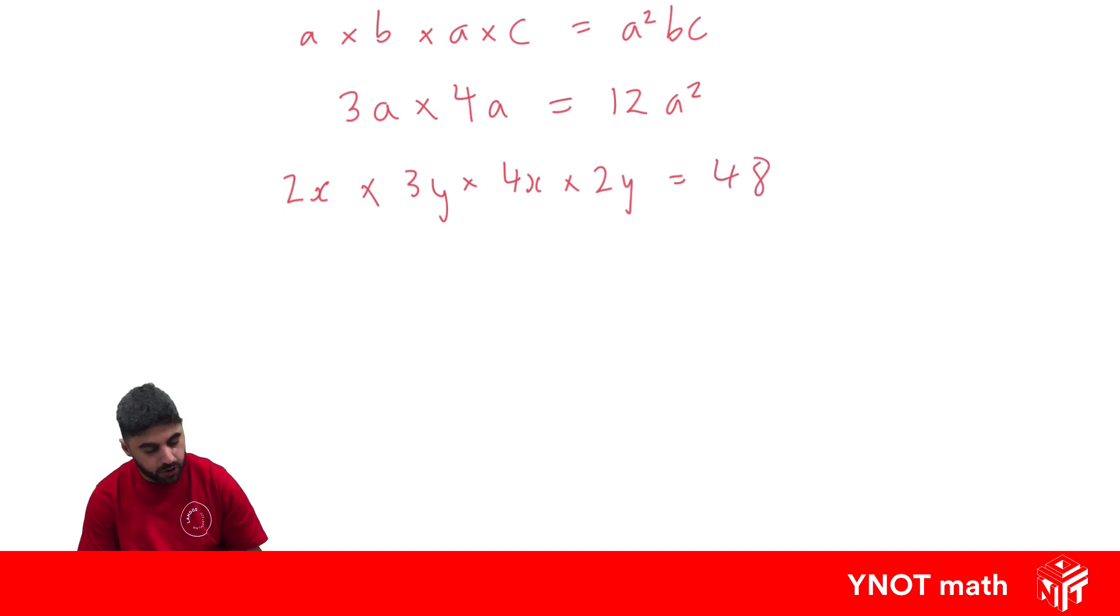Now pronumerals. Let's go in alphabetical order. x comes before y. x times x. Well x times x is x squared. y times y. Well that's just y squared. When we have all terms that are being multiplied with each other, we should end up with one term in the end.